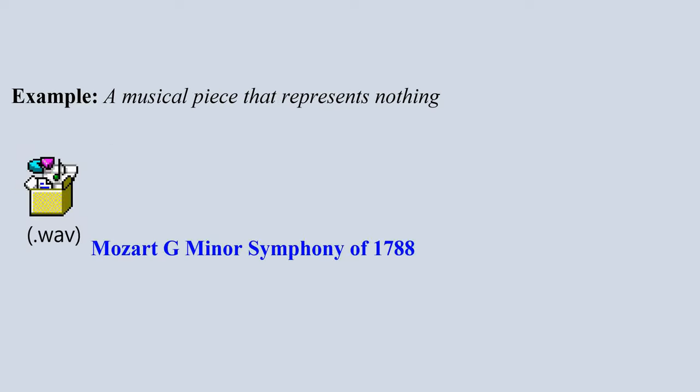Kant uses this same distinction in reference to how we might appreciate a piece of music. Imagine something like Mozart's G-minor Symphony. Mozart is often appreciated for the structure and beauty of his works and just the ways in which the sounds strike us as we appreciate a beautiful composition.